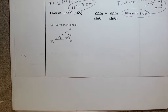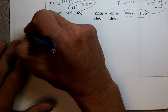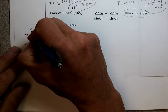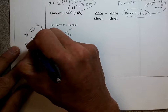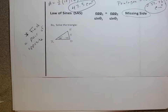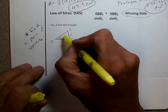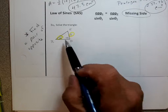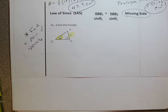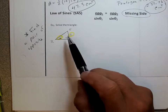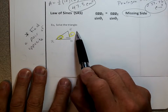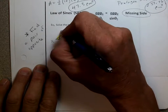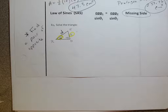Now, here's the key — Law of Sines, solve the triangle. We're not finding the area. First, find a pair of opposites. You've got to find a pair of opposites. I have a pair of opposites — I've got an angle and its opposite side. You cannot use this formula unless you have a pair of opposites. I've got the angle and the five — those are opposites.